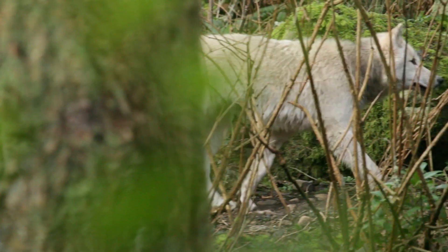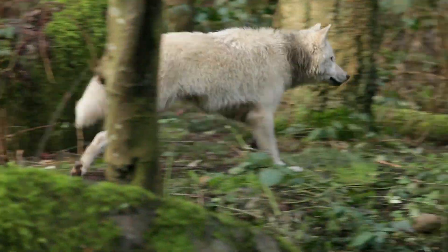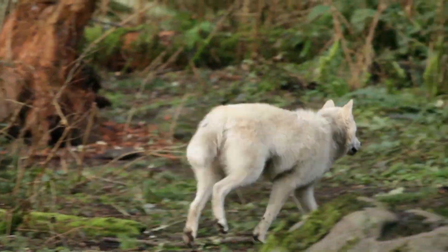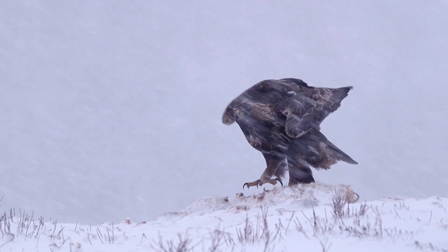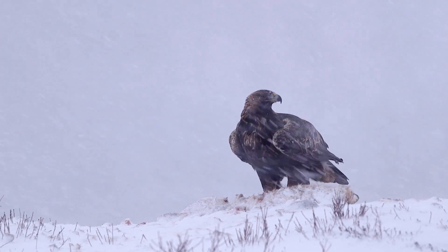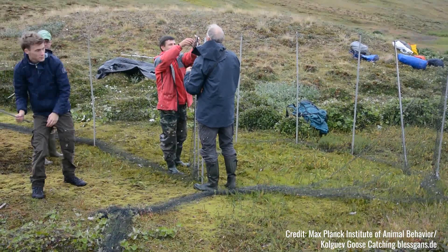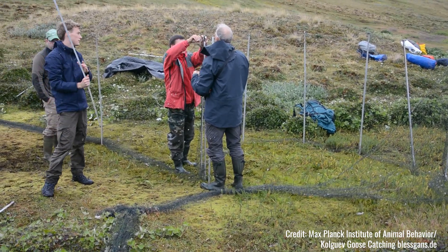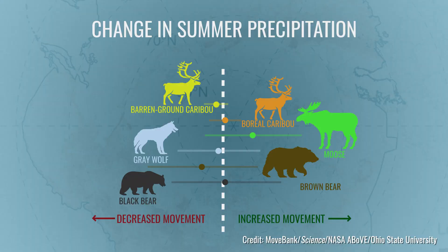In this recent project led by Dr. Peter Mahoney at the University of Washington, we looked at how movement speeds of different animal species change with precipitation and temperature. We looked at data for more than 1,700 animals.